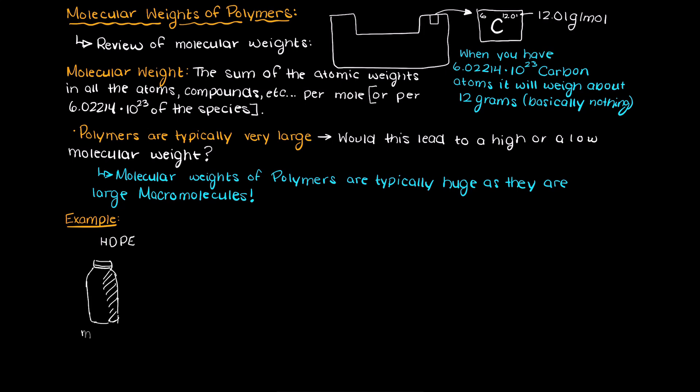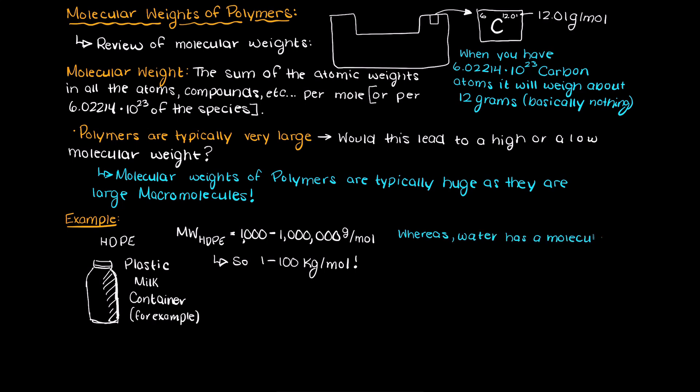For a more practical example, think of HDPE commonly used in a lot of food packaging applications, which has a molecular weight of 1000 to a million, depending on the average polymer chain length of the polyethylene, and therefore it can weigh anywhere from 1 to 100 kg per mole, whereas the molecular weight of water is about 18 g per mole, which is practically nothing.